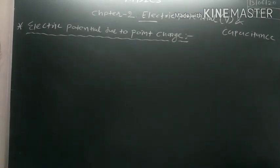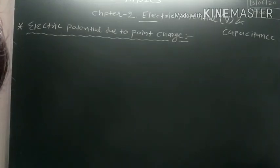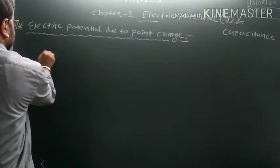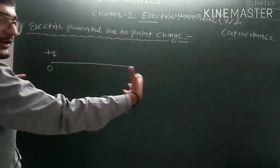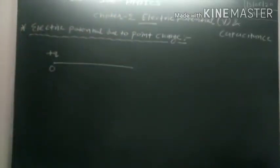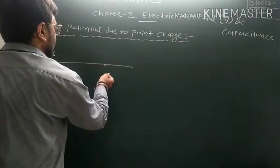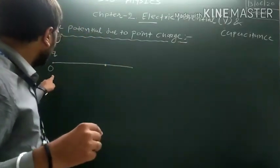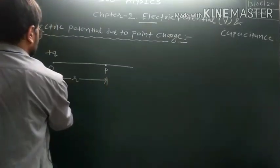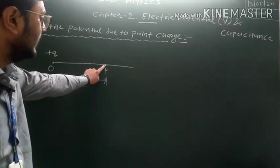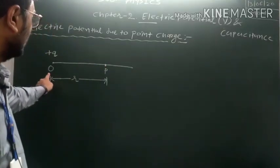We can derive an expression for the electric potential due to a point charge. Consider a positive point charge Q placed at the origin. It produces an electric field radially outward. We wish to calculate the electric potential at a point P at a distance R from O.